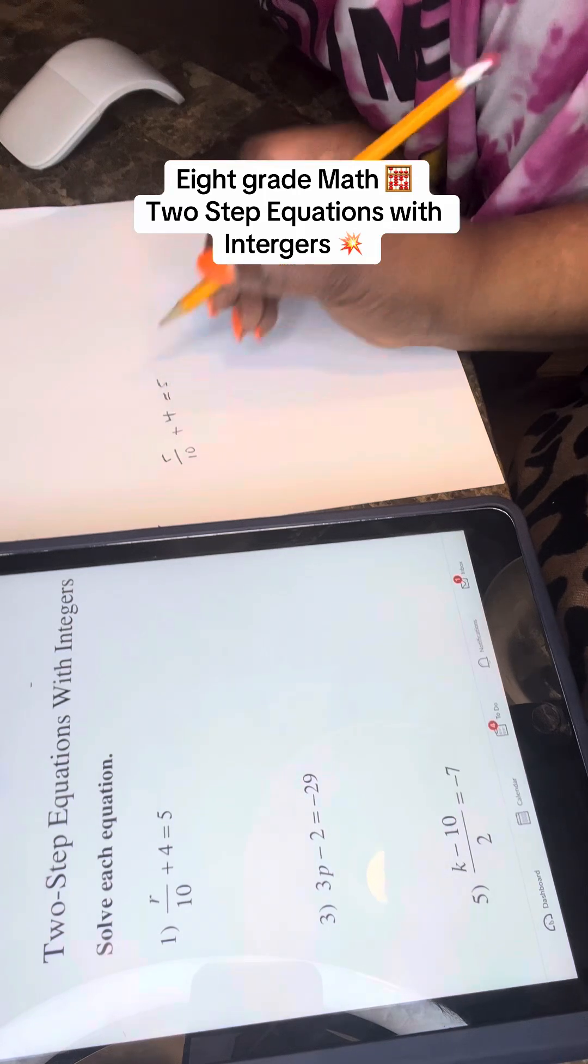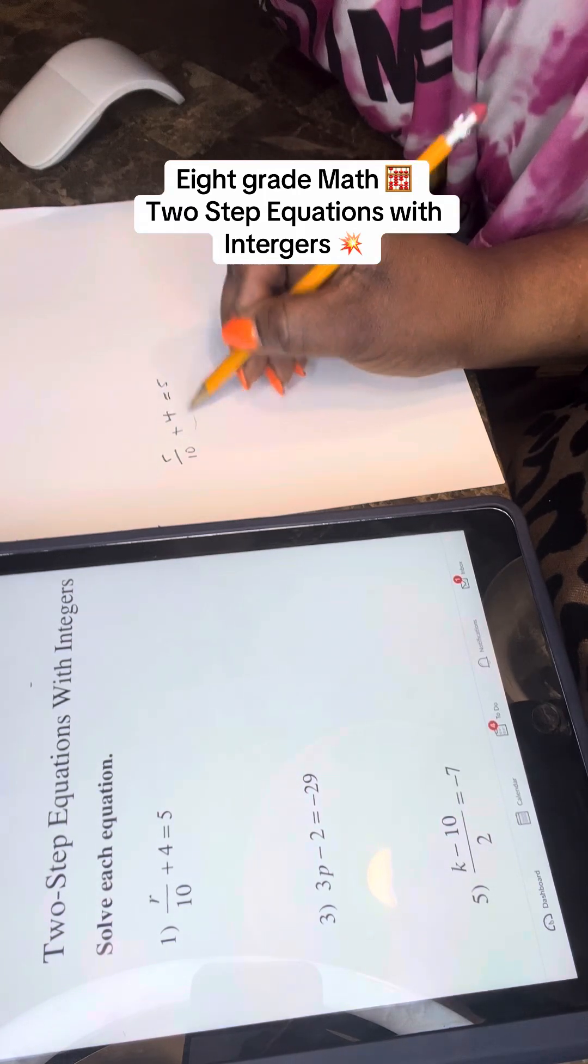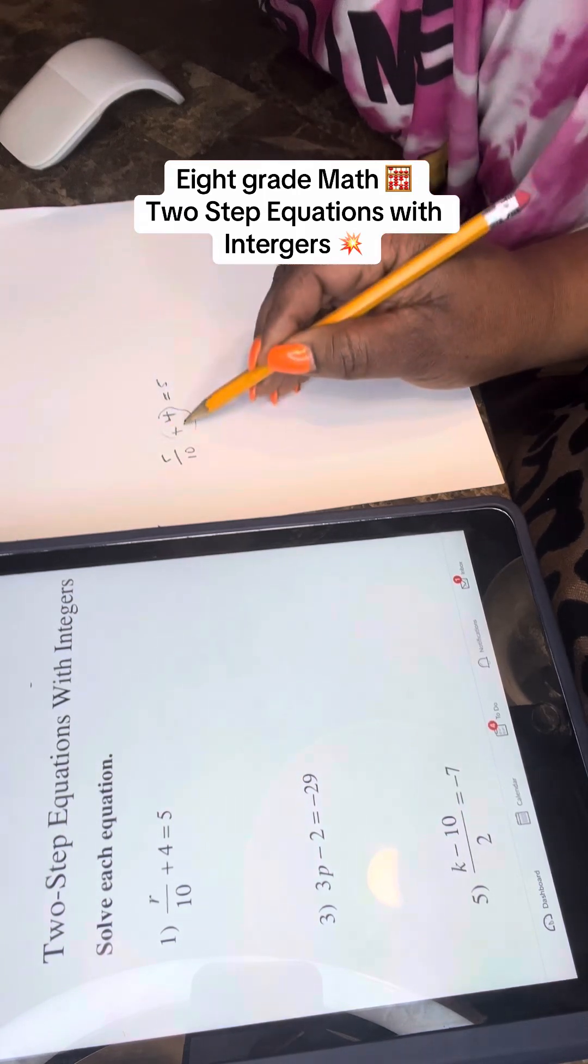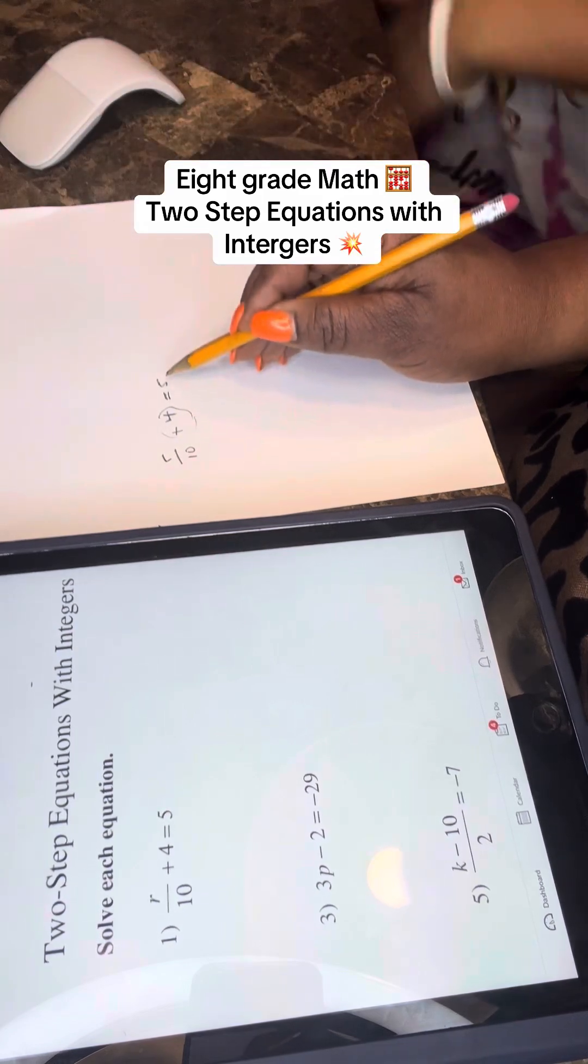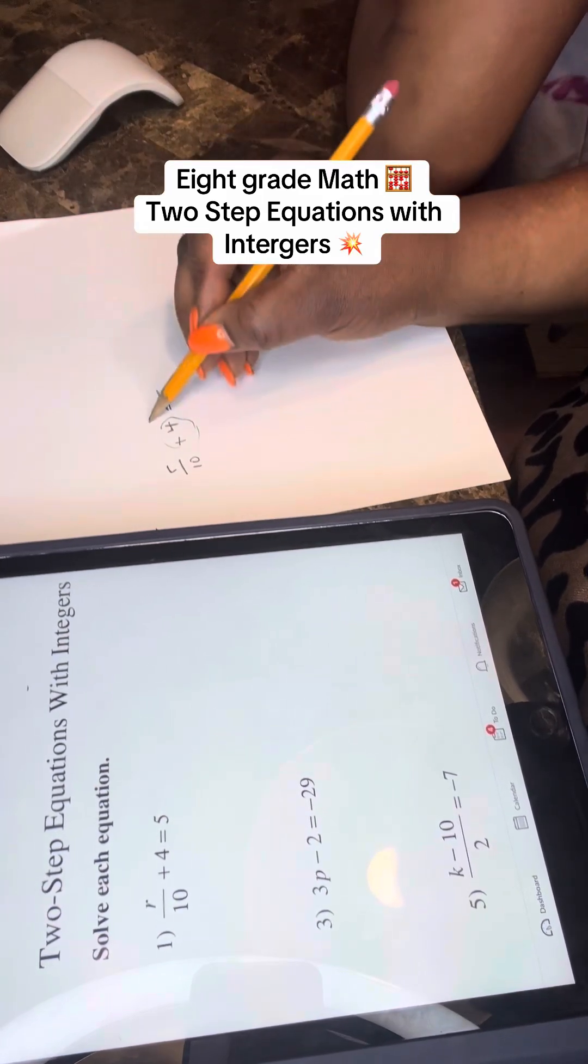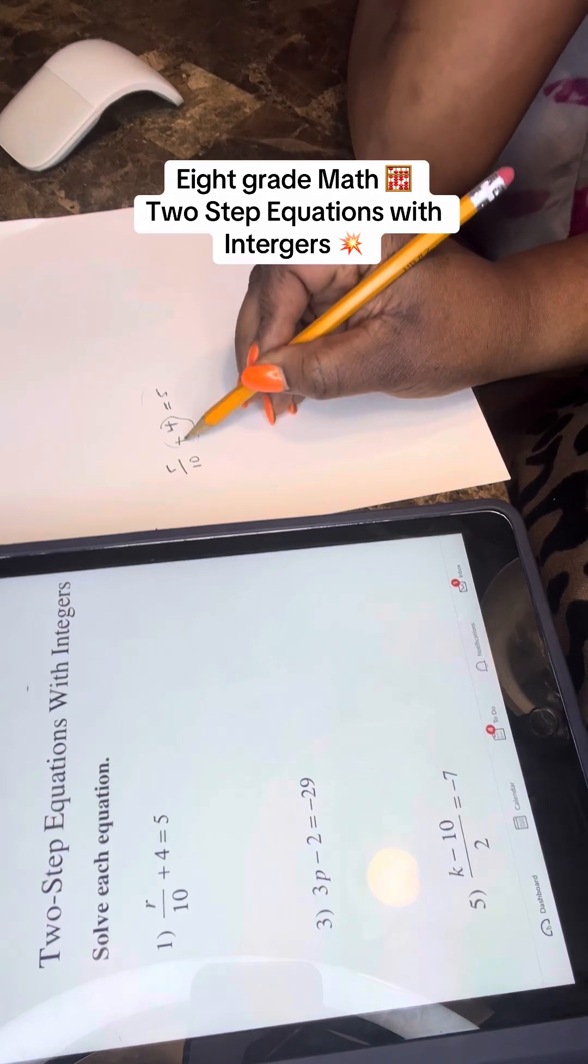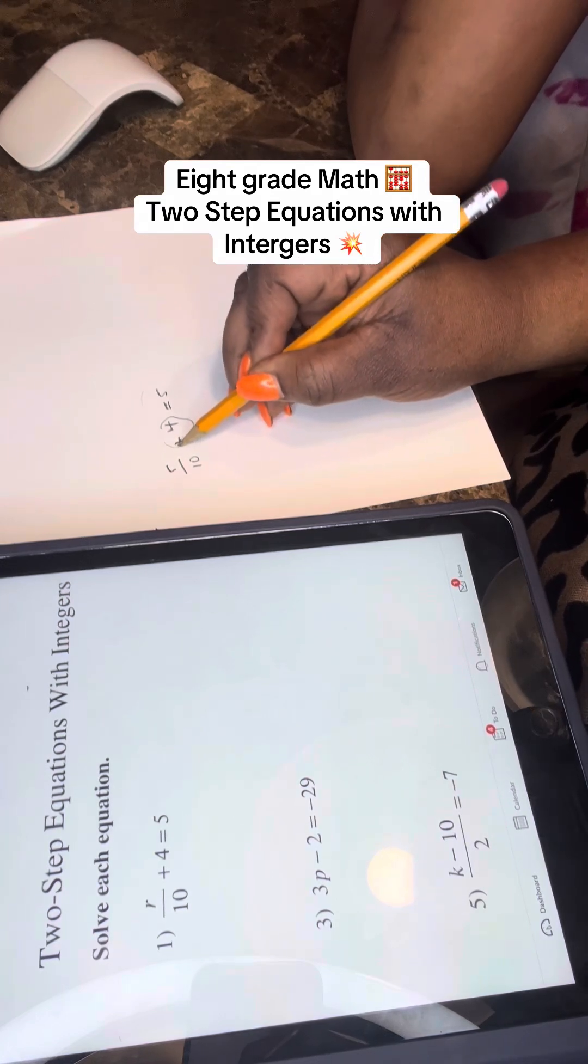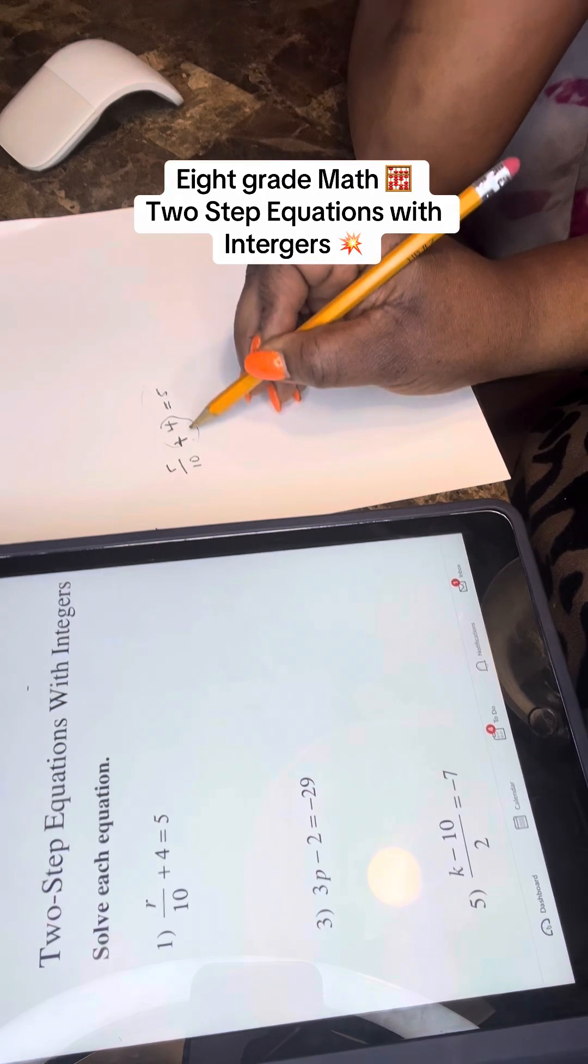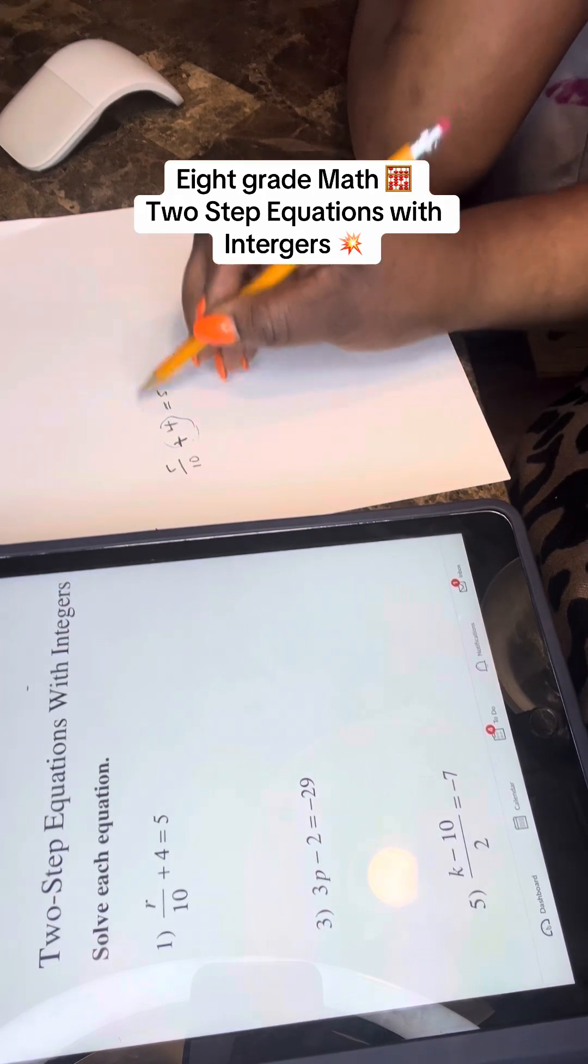So this is an equality sign, do you understand? So first you have to get rid of this number. When you move something from here, you can cross it over to this side. The sign becomes the opposite. So like you have here is a positive sign, you see it's plus, it means plus, do you understand?